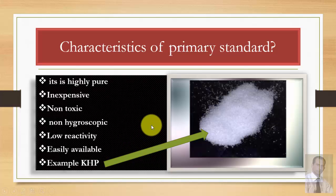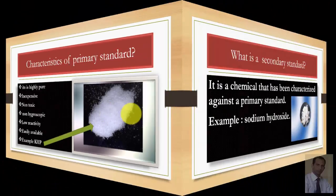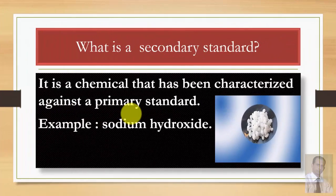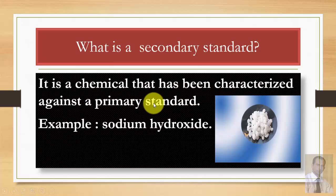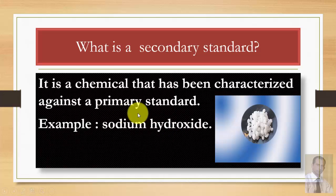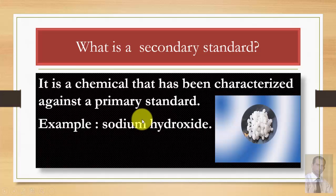An example of a primary standard is KHP — potassium hydrogen phthalate. Against a primary standard, we standardize a secondary standard. A secondary standard is a chemical substance that has been characterized against a primary standard. Sodium hydroxide is an example of a secondary standard because it absorbs moisture and does not have all the characteristics of KHP.